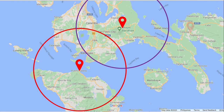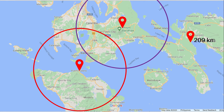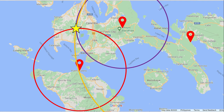This is where the third seismic station is needed. Now let's take a look at the Feebox-Ginayangan Seismic Station, which is 209 kilometers away from the epicenter. Following the same procedure, we are going to draw a circle with a 209-kilometer radius. If done correctly, you will notice that the three circles intersect at one point. This is the location of the epicenter. Thus, the epicenter is found at Tagaytay City.